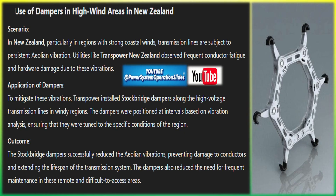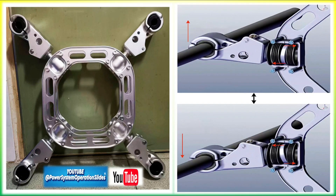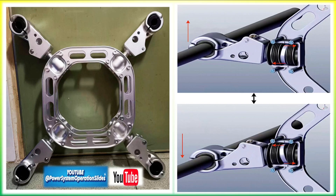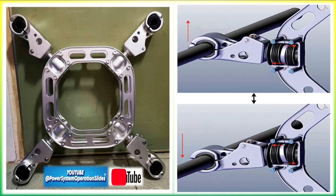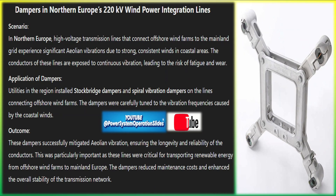Here are some real-world applications. Stockbridge dampers on the Trans-Alaska Pipeline System were installed to mitigate Aeolian vibrations, significantly reducing conductor fatigue and infrastructure damage. Galloping control in Ontario Hydro's 500 kV lines used interphase spacers and pendulum dampers to control icing-induced galloping, reducing electrical faults and mechanical stress. Aeolian vibration control in the Great Plains of the USA used Stockbridge dampers to reduce wind-induced vibrations, improving conductor reliability and reducing maintenance. Subspan oscillation control in Brazil's Itaipu hydroelectric transmission lines used spiral dampers to minimize oscillations in bundled conductors, preserving the integrity of high-voltage lines.